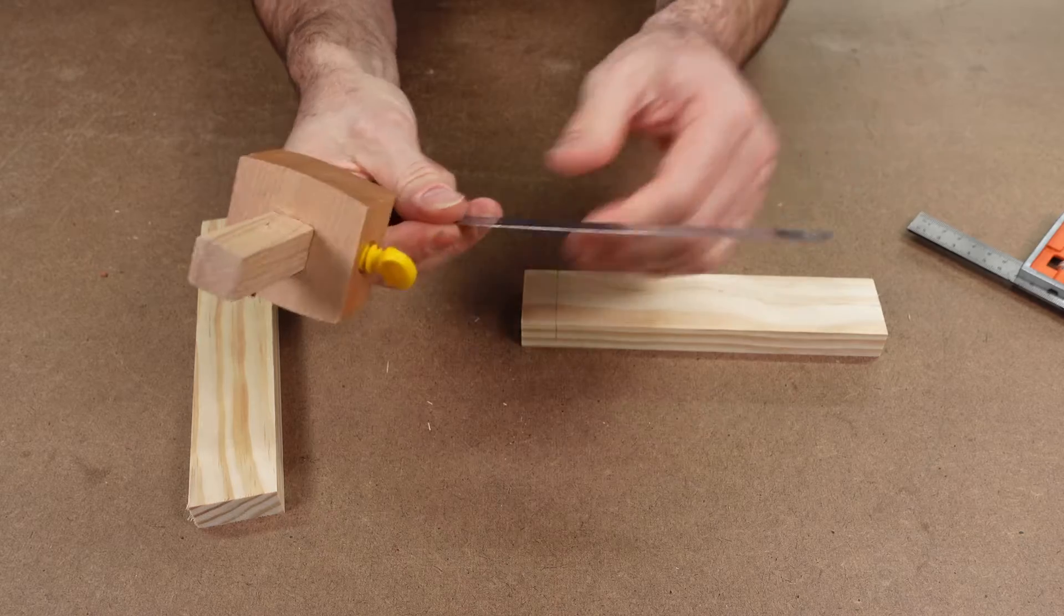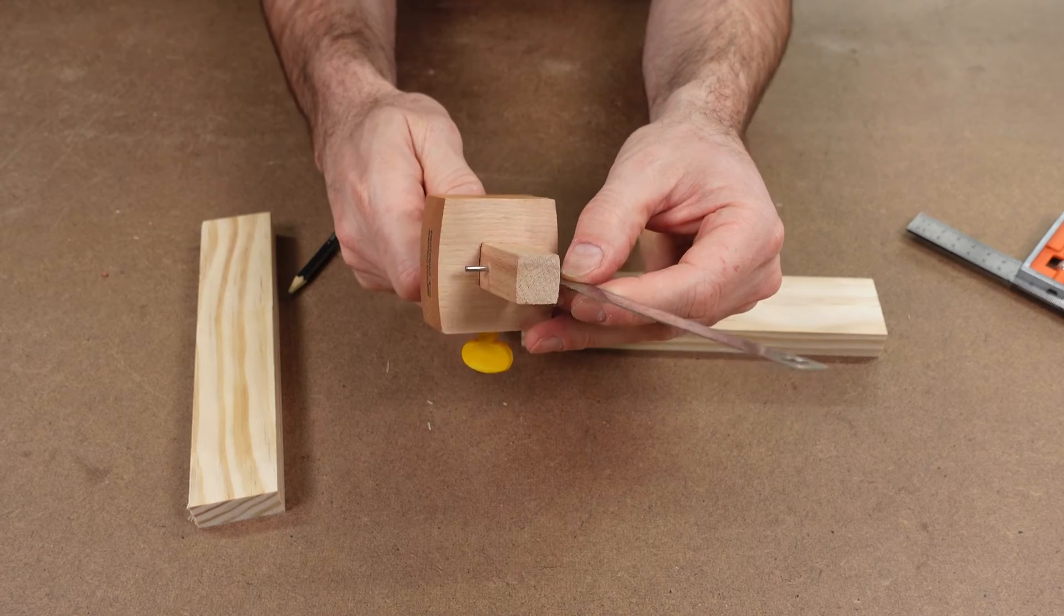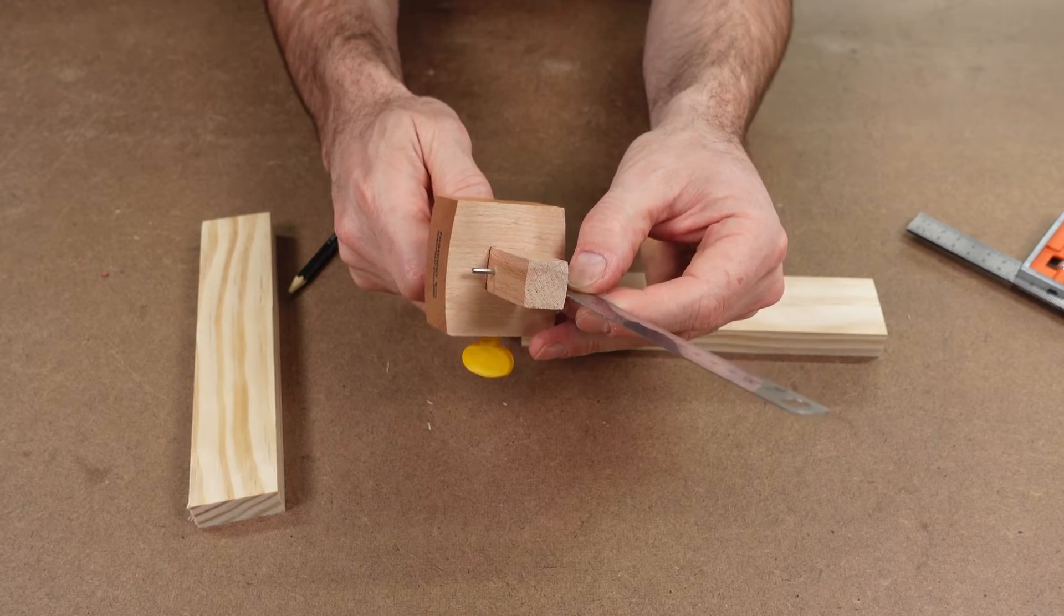The depth of the rebate can vary. It's usually about a third to a half the thickness of material. In this example, we'll use half.